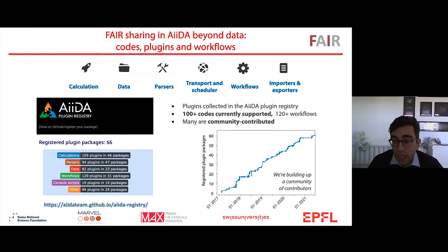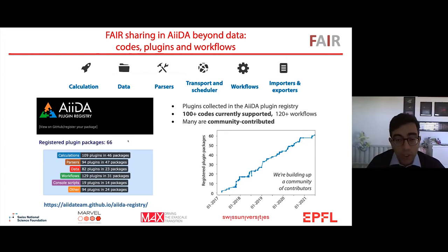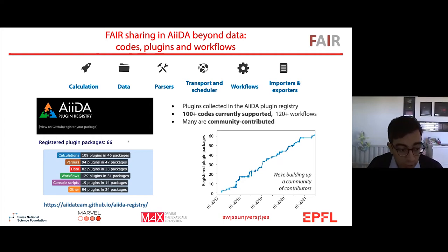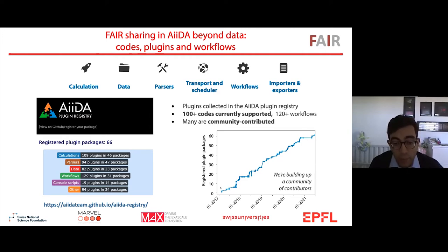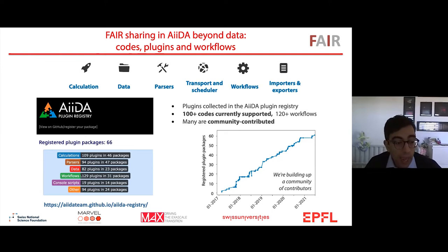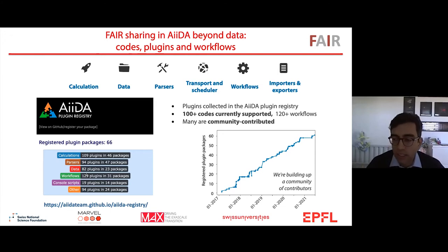The first step to make this appealing to the community is for AiiDA to support a large number of codes. Since 2017, we've been building what we call the AiiDA plugin registry — a lightweight registry on GitHub where anyone developing a plugin, workflow, or any support for AiiDA can register it and point to their repository. In five years, the number of plugin packages has grown steadily from two or three at the start to now 66 different GitHub repositories providing plugins, with essentially 100 or more codes supported and over 100 different workflows.